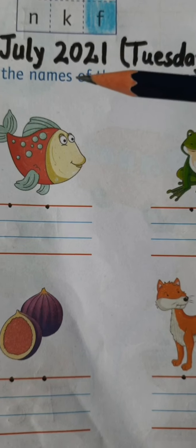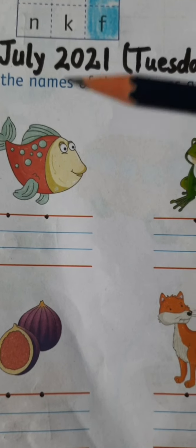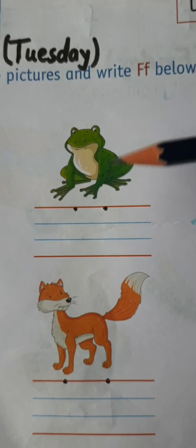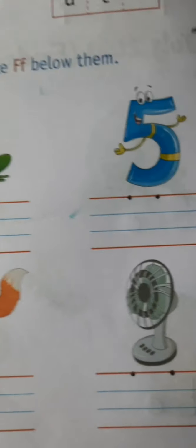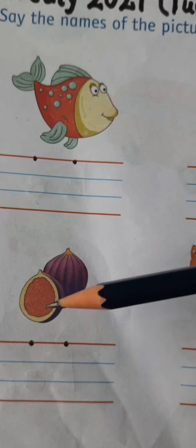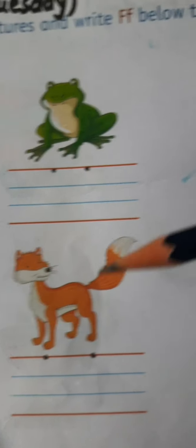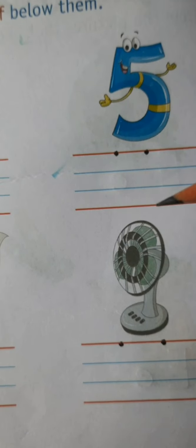F is for fish. Fish. Frog. Five. Fig. Fox. And Fan.